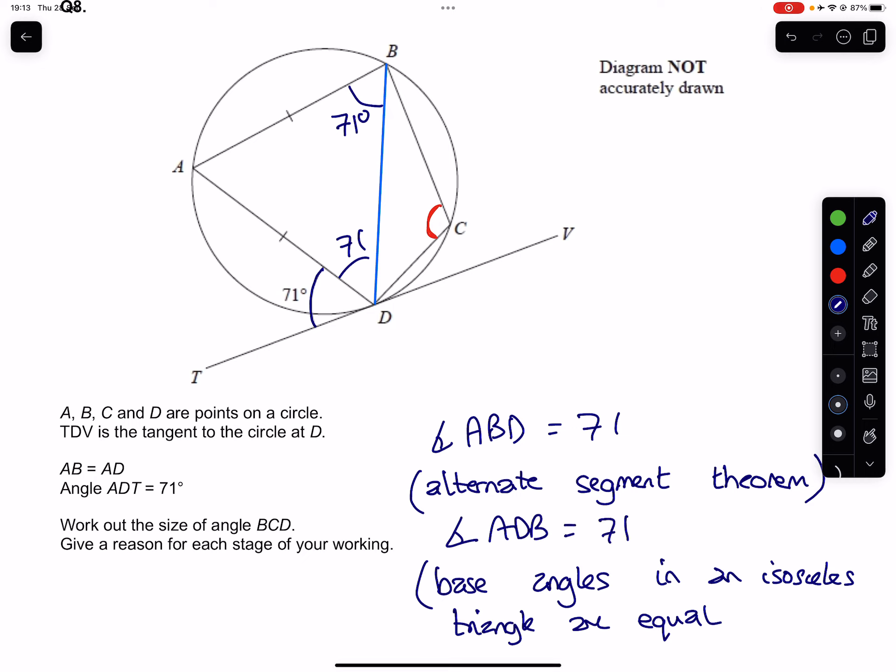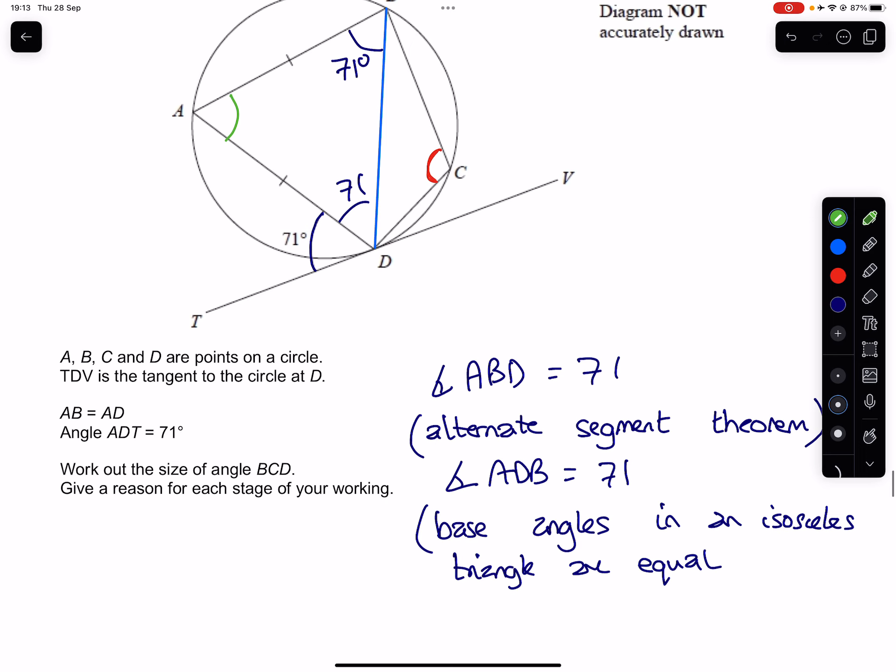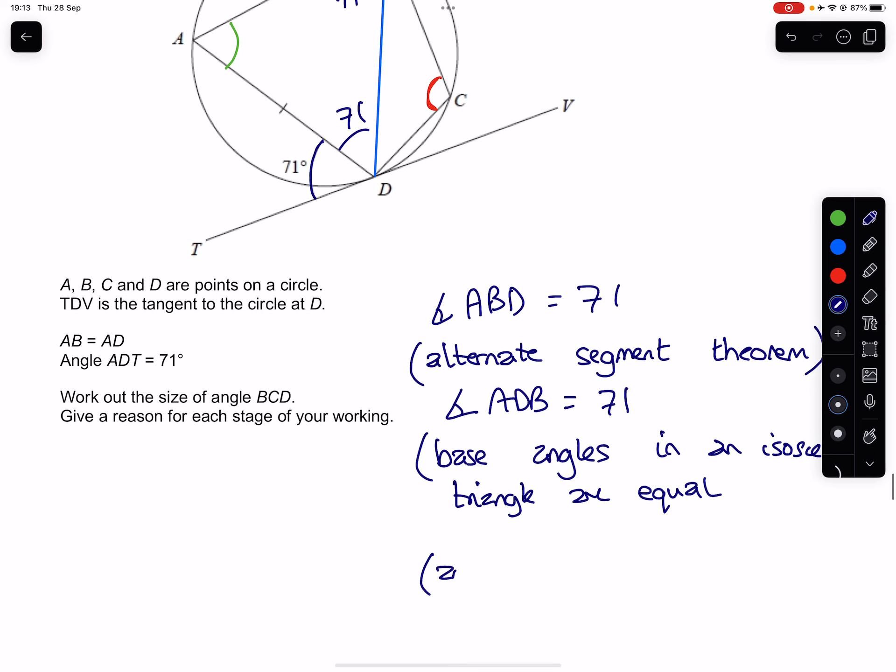From there, we can now figure out this angle here in green because of the fact that angles in a triangle add up to 180. So that would be our next reason: angles in a triangle add up to 180 or sum to 180.